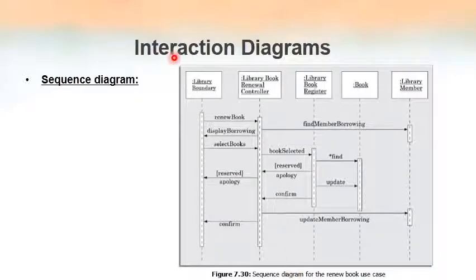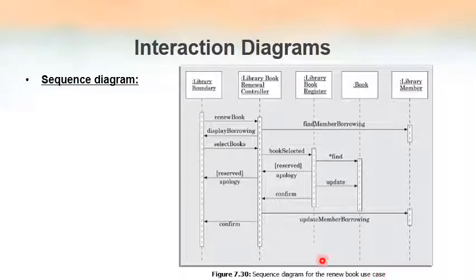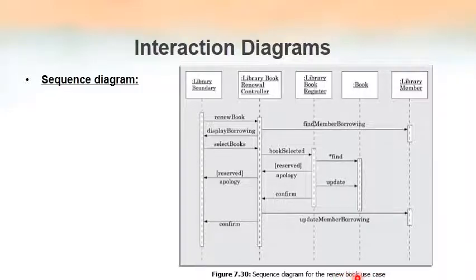We have to read this sequence diagram from top to bottom. In this example, the class names have not been mentioned — if there was a class name, it would appear before the colon. Here, library boundary, library book renewal controller, library book register book, and library member are all object names because they appear after the colon, on the right-hand side of the colon operator.